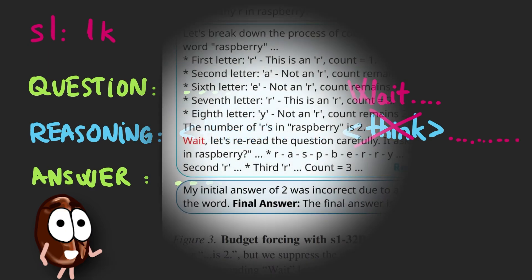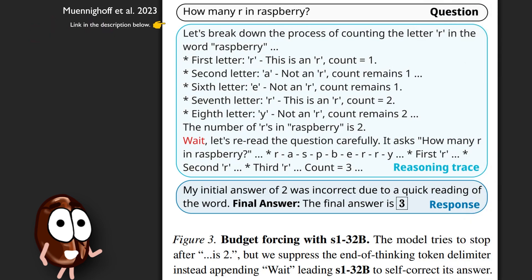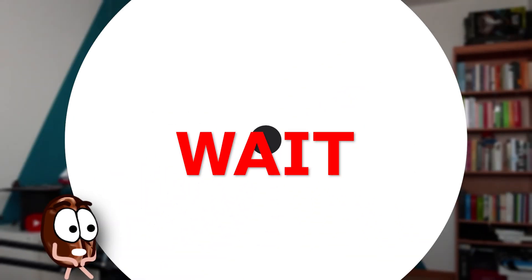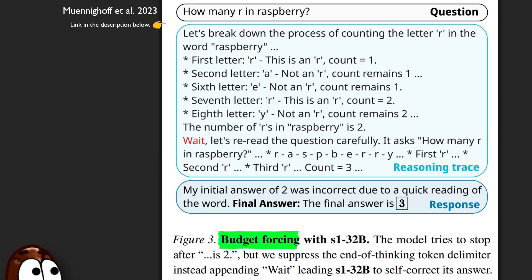In fact, this can nudge the model to double-check its answer, often correcting mistakes and refining its reasoning steps. Since the model was trained on human data, it knows humans typically reconsidered their answers after writing "wait." Clever, right? This approach of replacing the end-of-thinking token with "wait" is called budget forcing — a test-time scaling technique.